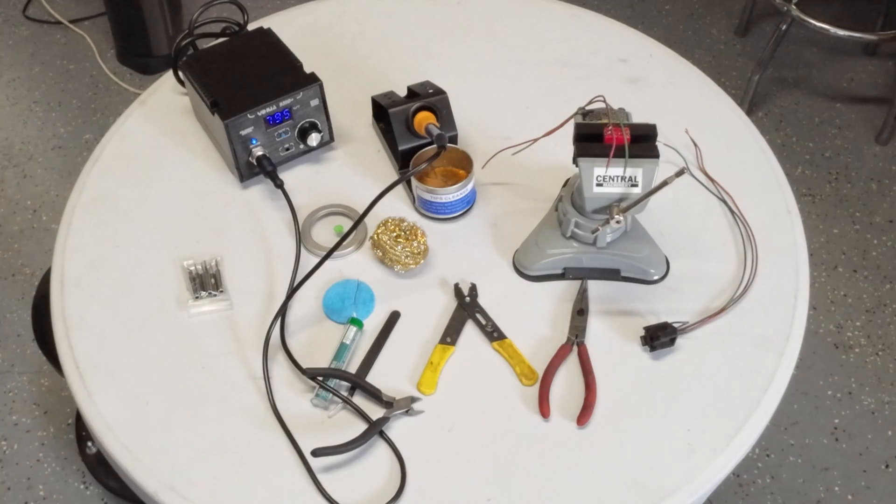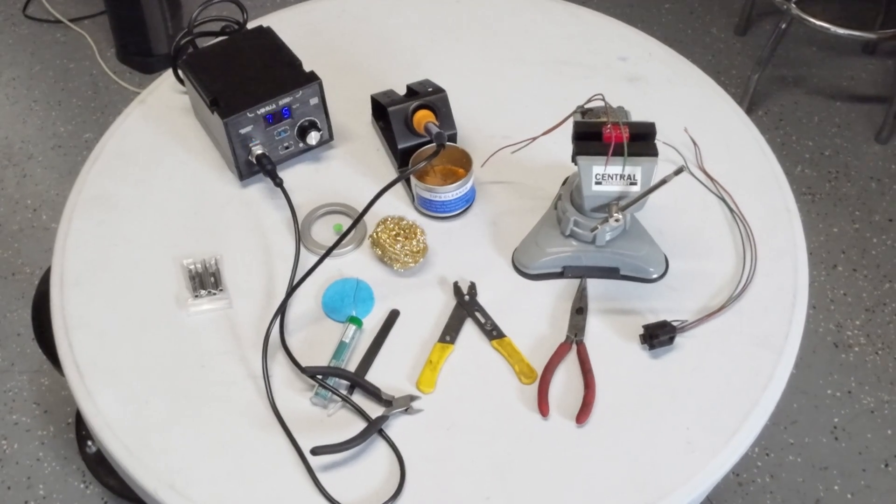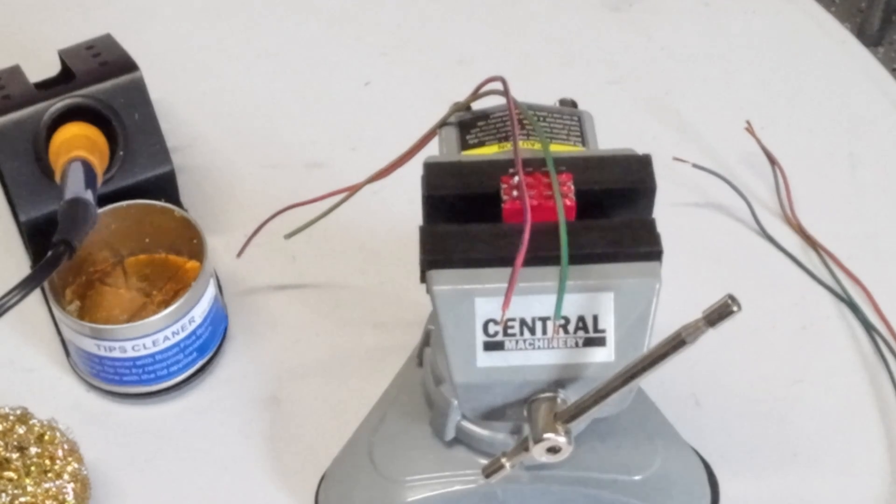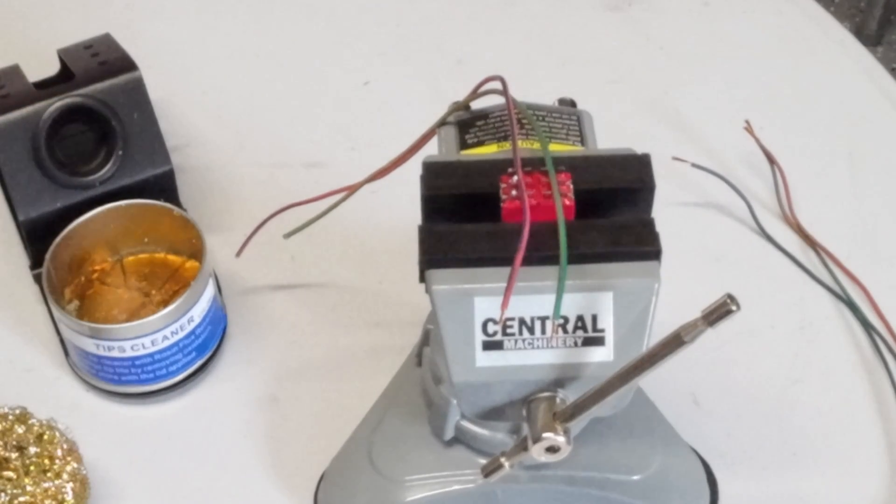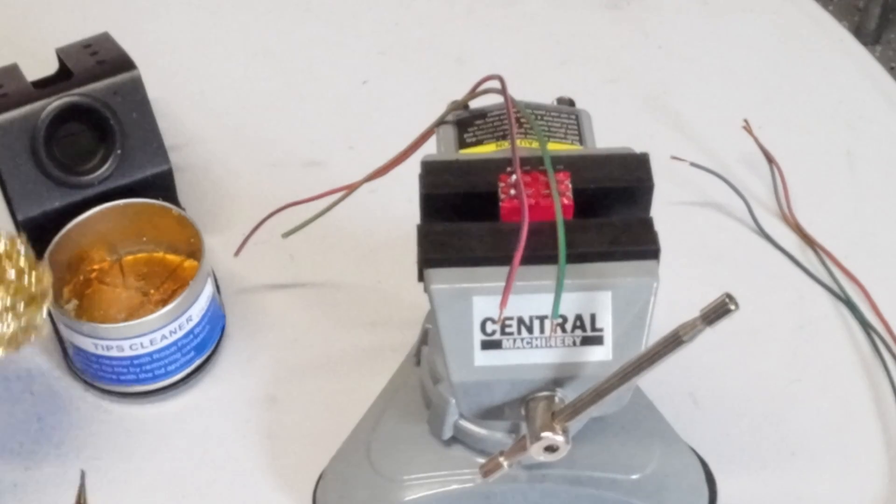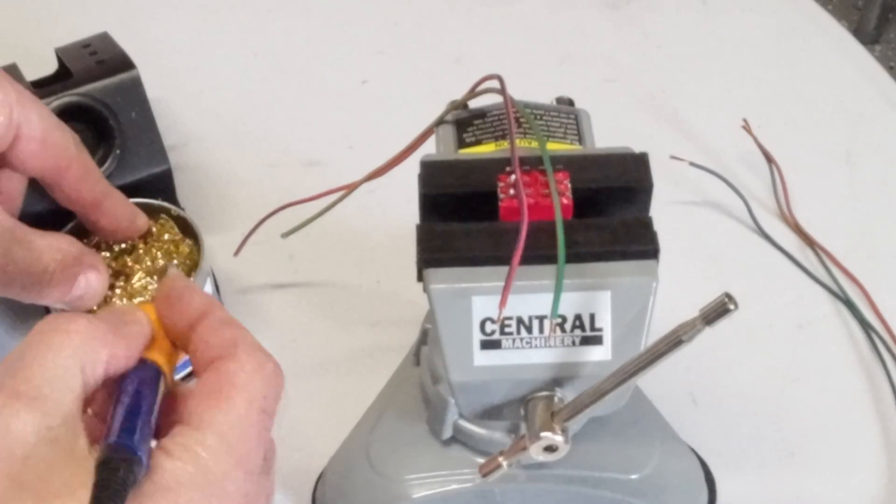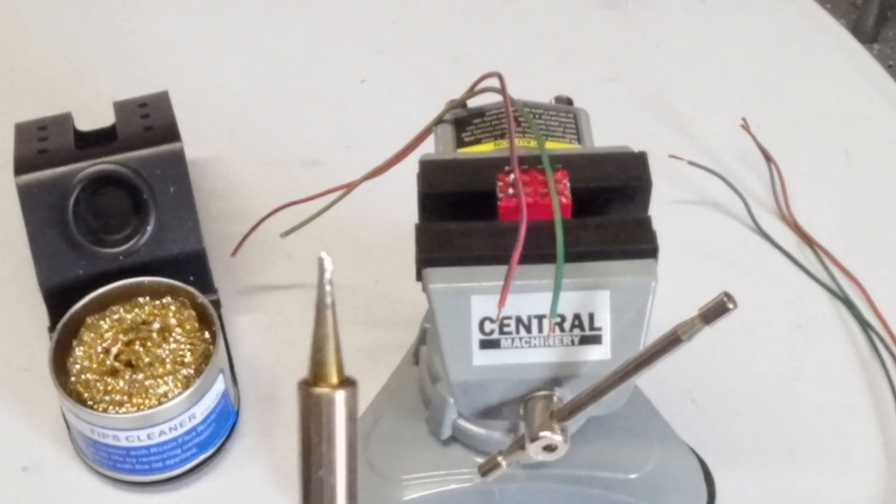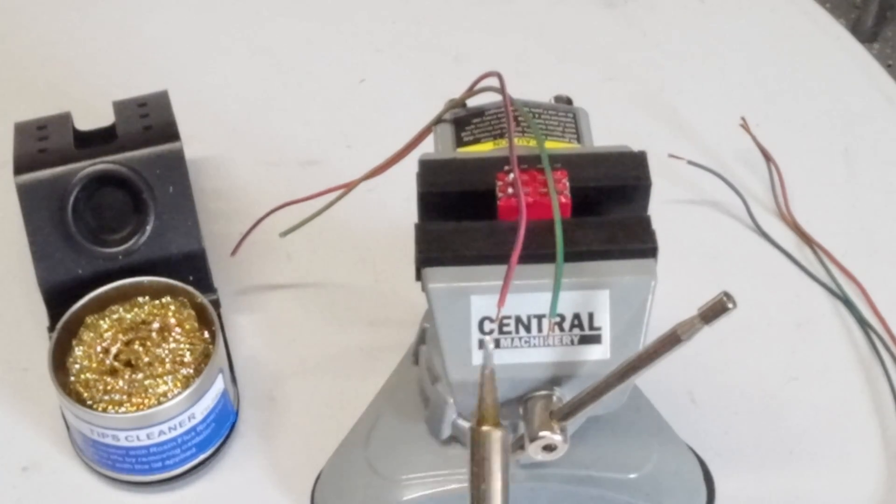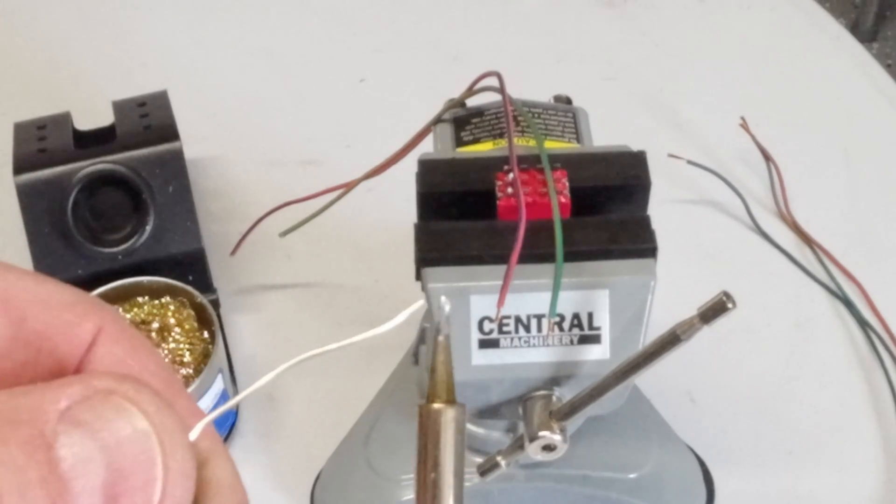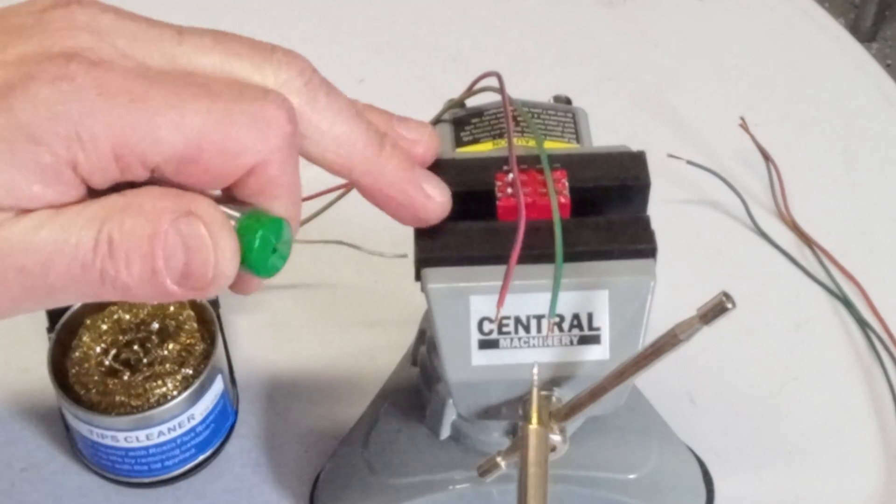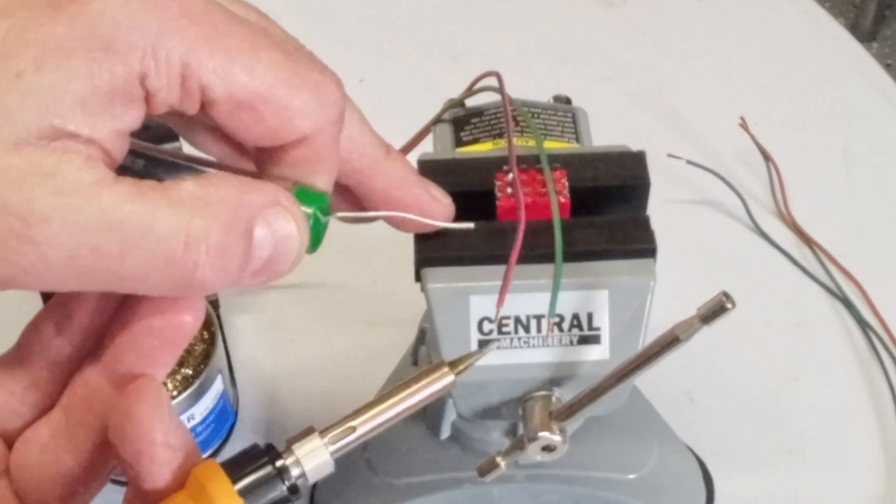I'm actually going to put solder on the wires before I solder them onto the switch. Let me get a close-up shot here. Okay, so hopefully you can see what's going on. I'm going to prep my soldering iron again. You want to keep this solder tip clean and shiny.